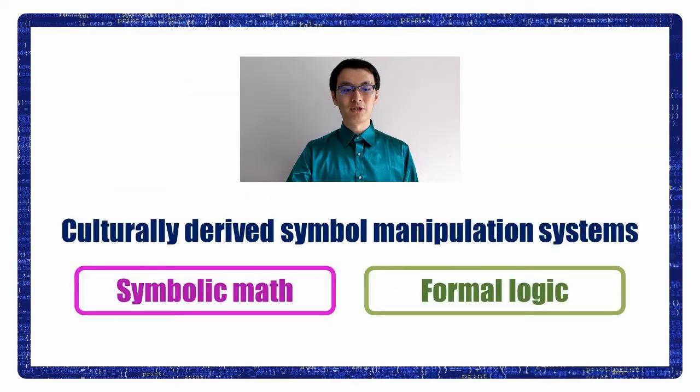Symbolic Math and Formal Logic are both culturally derived symbol manipulation systems. They were once hypothesized to rely on the neural circuit of language because both of them involve some kind of nested hierarchical structure like language does. For example, we can have a math equation which contains parenthesis within parenthesis within parenthesis.